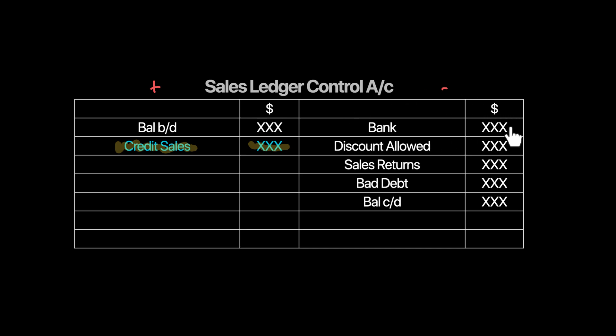The bank figure is given; you calculate receipts from trade receivables. Discount allowed, sales returns, and bad debts all decrease your trade receivables and go on the credit side. Closing trade receivables are given. Using the sales ledger control account, our job is to calculate the missing figure — credit sales — in an incomplete records question.